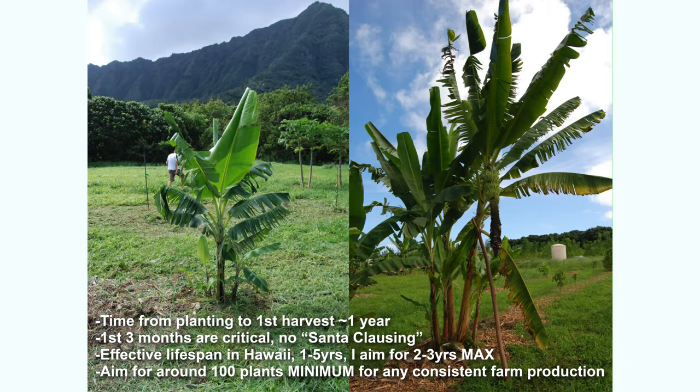Basic stats: bananas take about one year to the first harvest from planting — that's variable depending on variety and conditions, but it's a decent baseline. Subsequent fruiting is all over the board depending on variety, location, and management, but you could reasonably expect about two to three bunches per year after the first year once a mat is established.